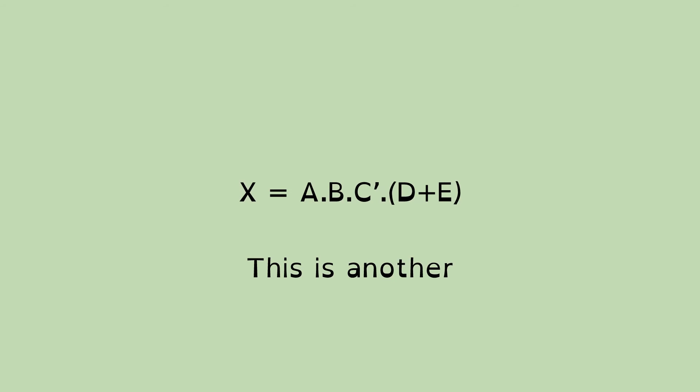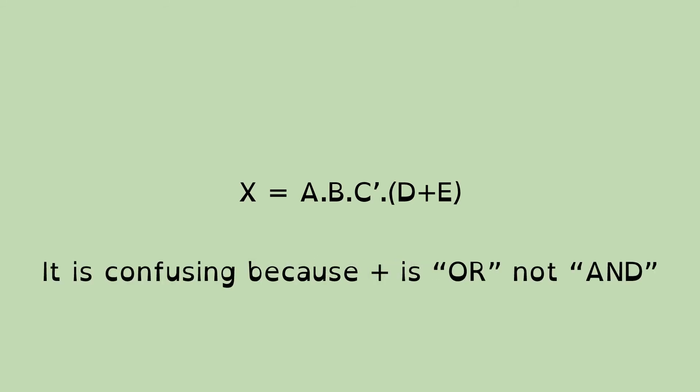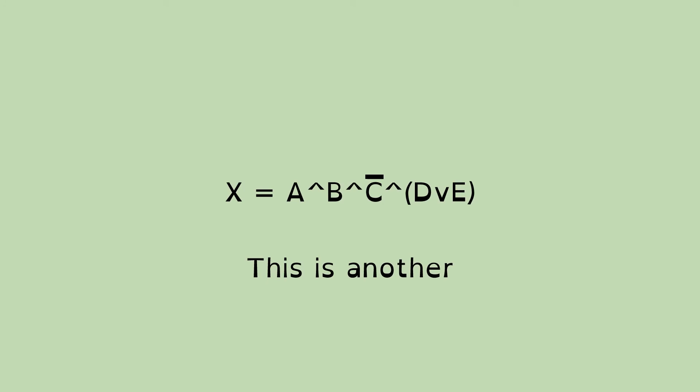Here's another. In this situation, and is represented by a dot or a full stop, not is represented by an apostrophe, and or is represented by a plus symbol. I find this one particularly confusing because I think that plus should be and rather than or.